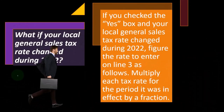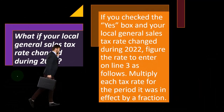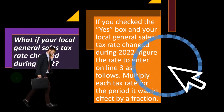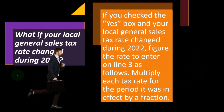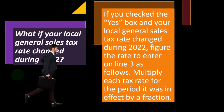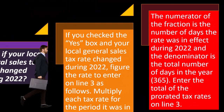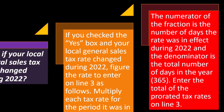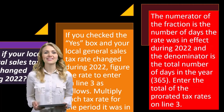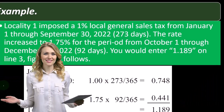You have two localities, two states, and the sales tax rate changed in your state. If you check the yes box and your local general sales tax rate changed during 2022, figure the rate to enter on line three as follows: multiply each tax rate for the period it was in effect by a fraction. The numerator is the number of days the rate was in effect during 2022, and the denominator is 365. Enter the total of the prorated tax rates on line three.